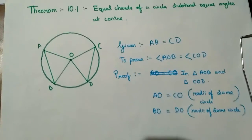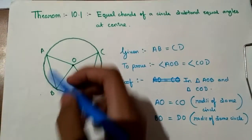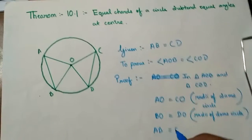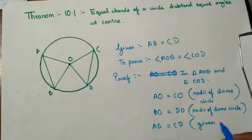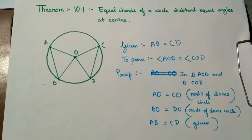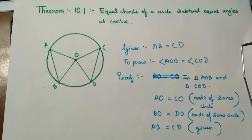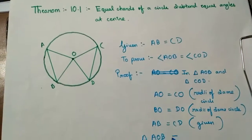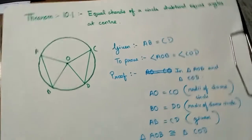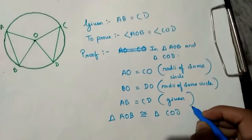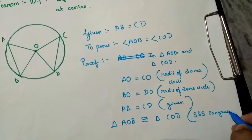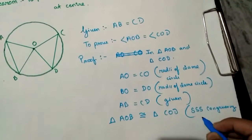Now the third side: AB is equal to CD — reason: given. So by the Side-Side-Side congruency condition, triangle AOB is congruent to triangle COD. The reason is the SSS congruency condition.